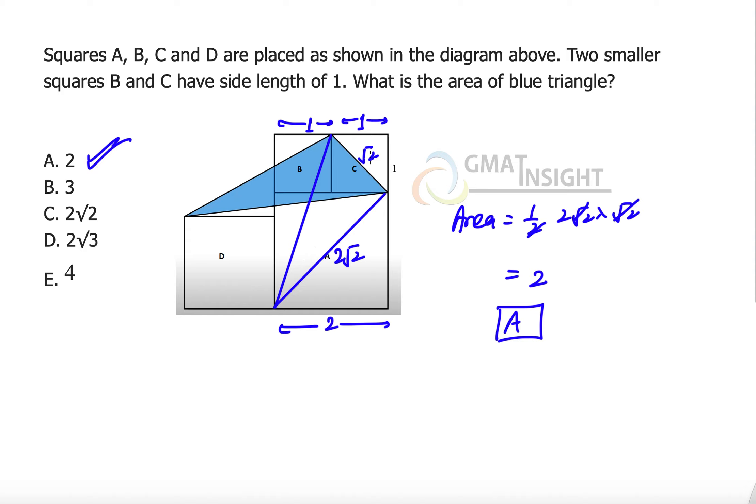I have taken this particular line as base and this particular line as height. The reason is that this is the diagonal of this small square C making an angle of 45 degrees, and this particular blue line is actually the diagonal of square A making another 45 degrees.